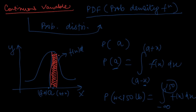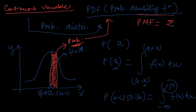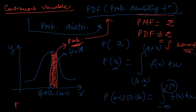PDF is the probability of a continuous variable. In PMF we used summation because we had individual discrete points. In PDF we cannot do summation because we have continuous variables, so we use integration instead. For summation we need not have an interval, but for integration we need an interval — keep these things in mind.